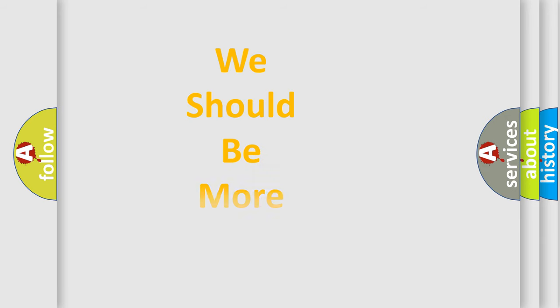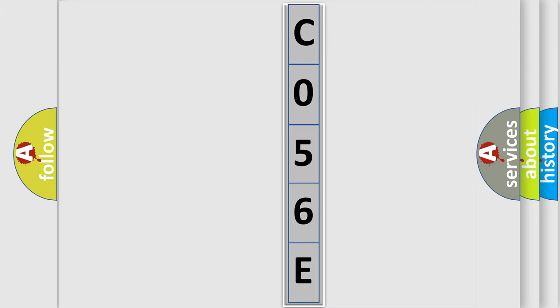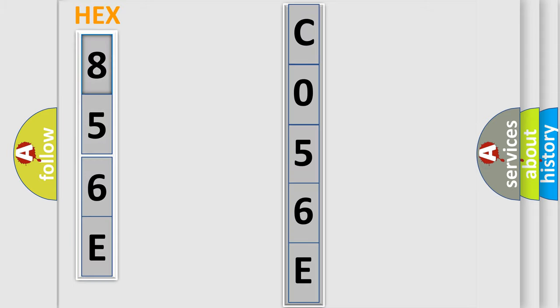The following demonstration will help you look into the world of software for car control units. The error code is split into two bytes consisting of 16 bits.